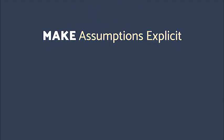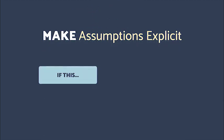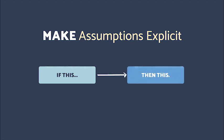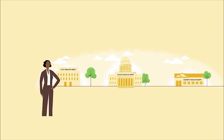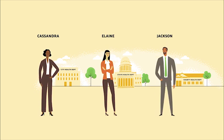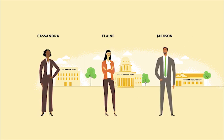Finally, we can be very explicit in noting any assumptions we have between the boxes or nodes in our logic model. A light blue box labeled 'if this' connects via arrow to a blue box labeled 'then this,' with 'why' appearing below. This will lead to insights about how our stakeholders expect the adaptation to work. Let's now check in with our practitioners to see how they are using these practices.